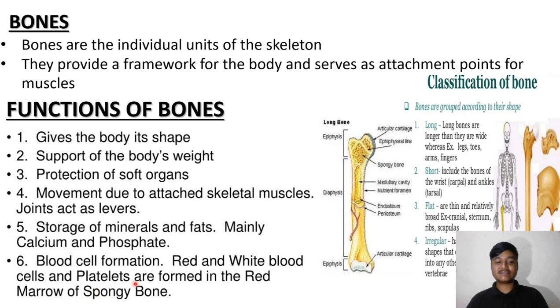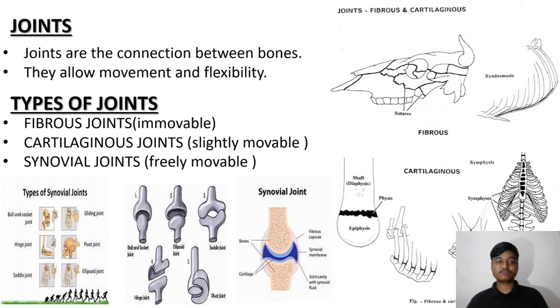Additional functions of bones include storage of minerals and fats — mainly calcium and phosphate — and blood cell formation. Red blood cells, white blood cells, and platelets are formed in the red marrow of spongy bone.